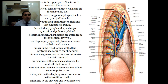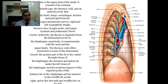Inferiorly, the thorax is separated from the abdominal cavity by the diaphragm. Superiorly, it communicates with the neck and upper limbs. The thoracic wall offers protection to some of the abdominal viscera. The greater part of the liver lies under the right dome of the diaphragm, the stomach and spleen lie under the left dome, and the posterior aspects of the superior poles of the kidneys lie on the diaphragm, anterior to the 12th rib on the right and to the 11th and 12th ribs on the left.